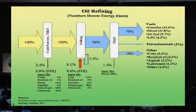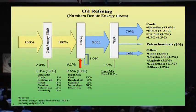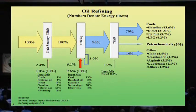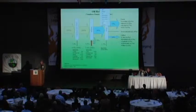We have oil refining as the status quo. It's a remarkably efficient process. For 100 units of energy going in, almost 80% of those leave as liquid fuels, very little as petrochemicals, and you need to put in — depending on how you count it — 12 to 14% additional energy to make the wheel go round.